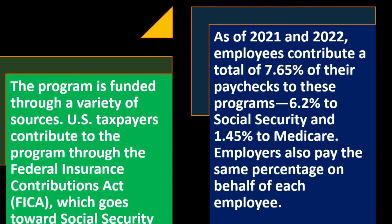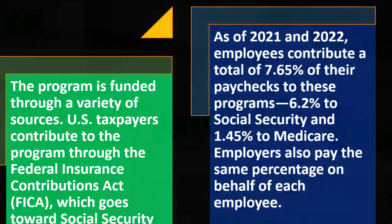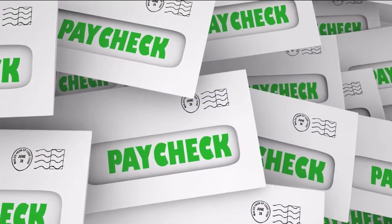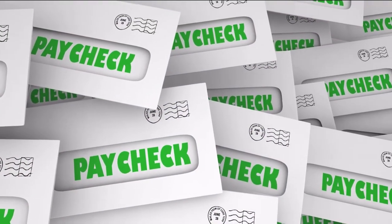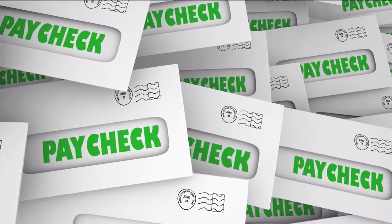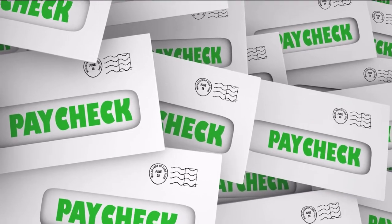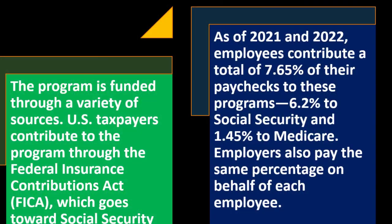As of 2021 and 2022, employees contribute a total of 7.65% of their paycheck to these programs. If you look at your paycheck stub, 6.2% is pulled out for Social Security, which is a substantial amount, and 1.45% is pulled out for Medicare. Employers also pay the same percentage on behalf of each employee, so it's effectively double that — and if you're self-employed, you pay both sides.